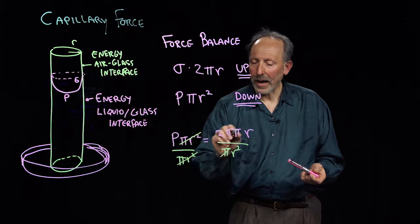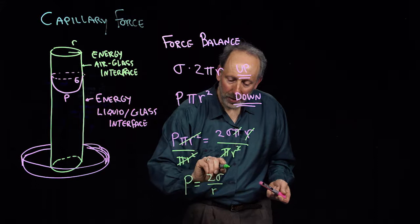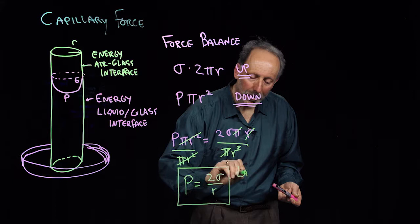And here we cancel the π out and we cancel one of the r's out. And what we're left with then is the pressure is equal to 2 times the surface tension divided by the radius. And this is known as the Laplace equation.